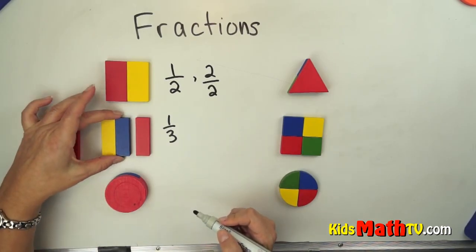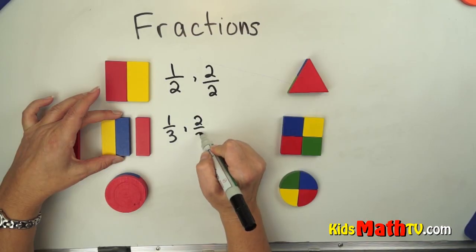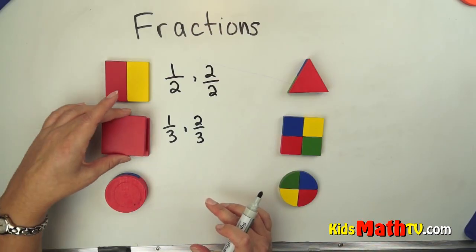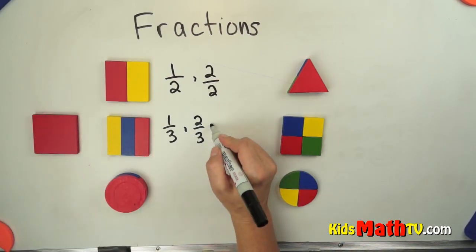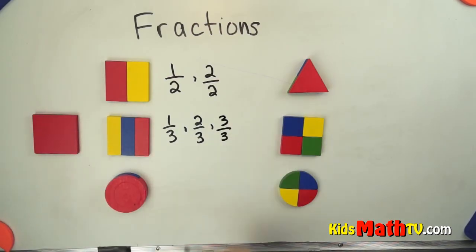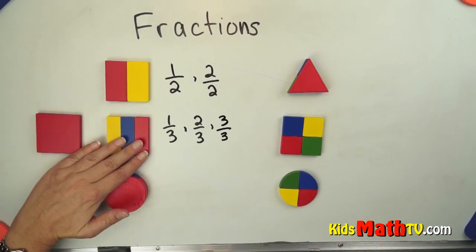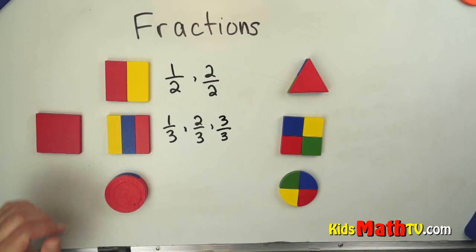Or I can take two out of three, and that's two thirds, two out of the three total. Or if we have the whole thing, we actually have three thirds. Same shape and size, so just depending on how many parts of that whole you take out.